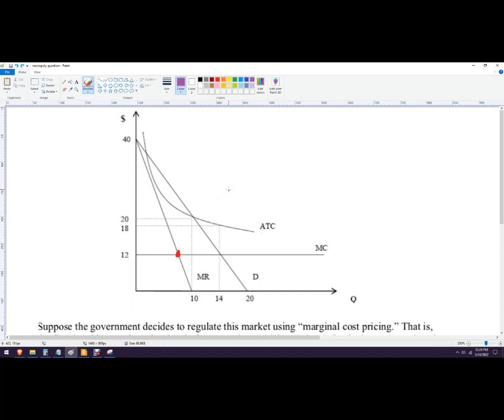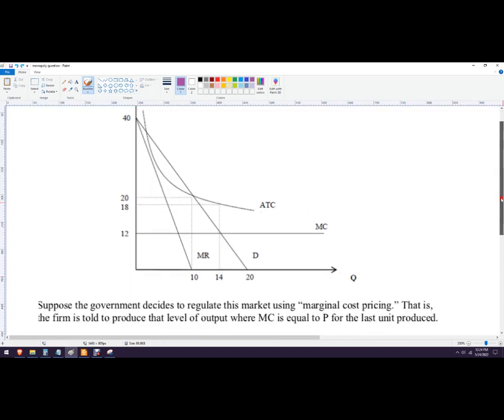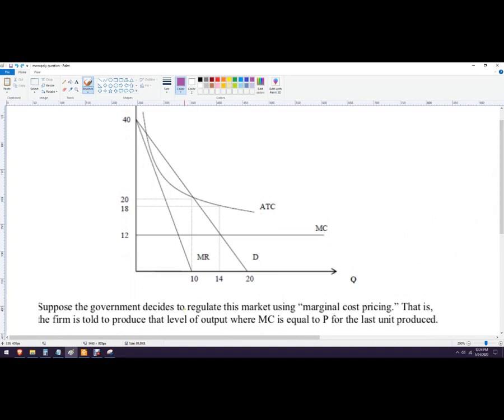However, natural monopolies are often like a water company or a power company or something like that. And they're often regulated by local state governments around the world. So in this question, it says regulators want to use marginal cost pricing. So that is exactly what it says.